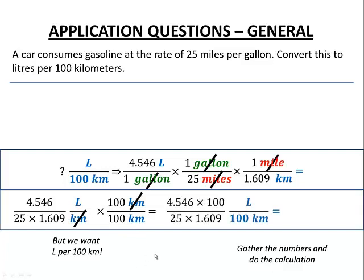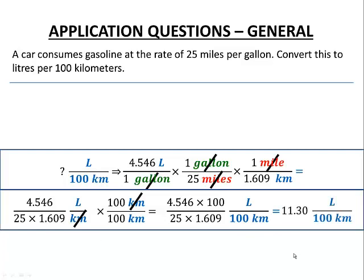With that adjustment, we have 4.546 times 100 in the numerator, and 25 times 1.609 in the denominator, with the result expressed as liters per 100 kilometers. Our final answer is 11.30 liters per 100 kilometers. Keep this as a strategy for the future: if you are asked for a rate with a number in the denominator, it is still totally doable.